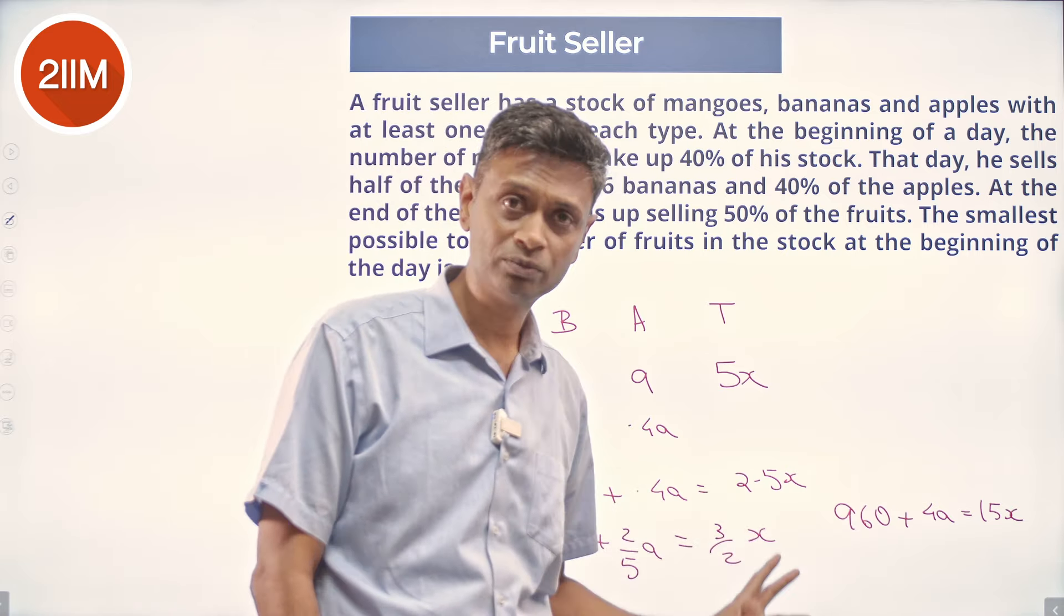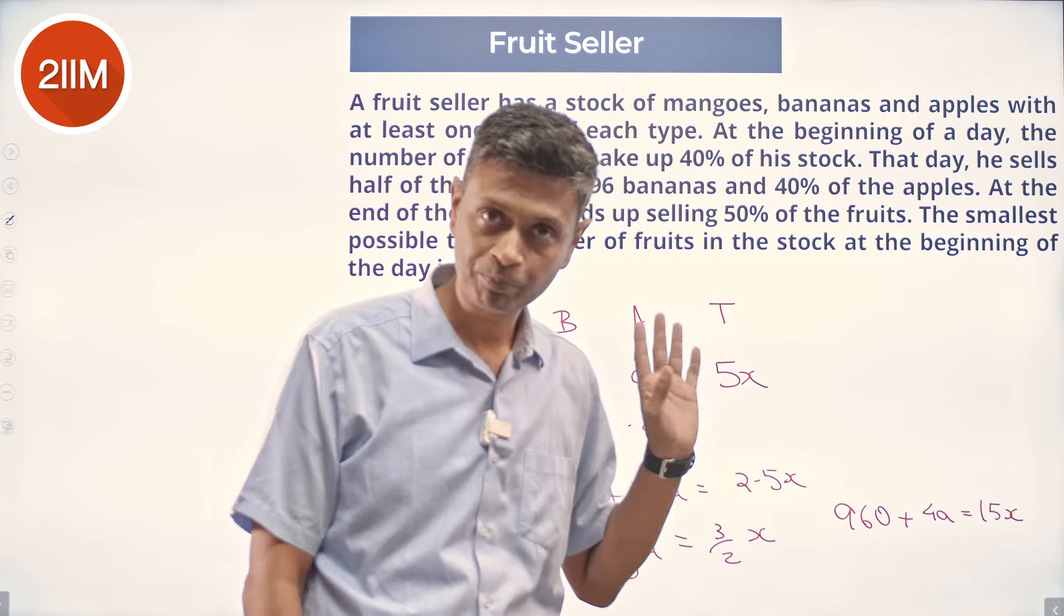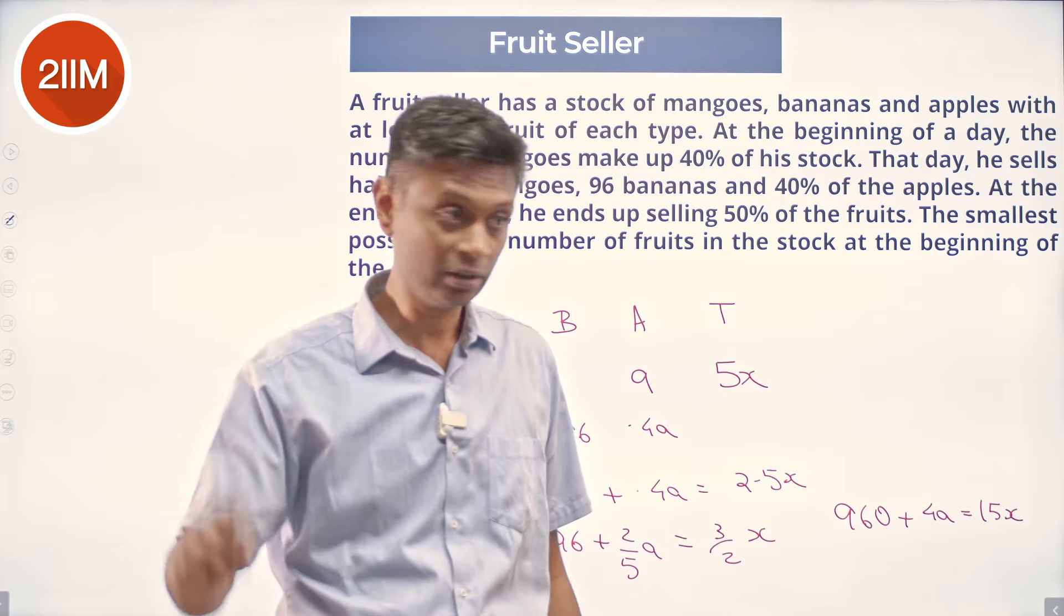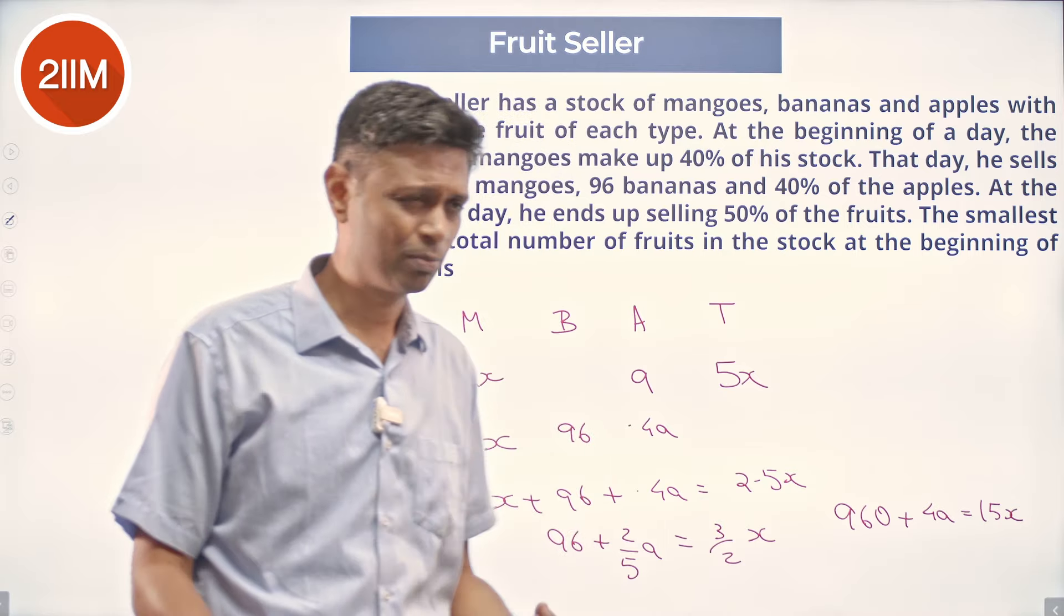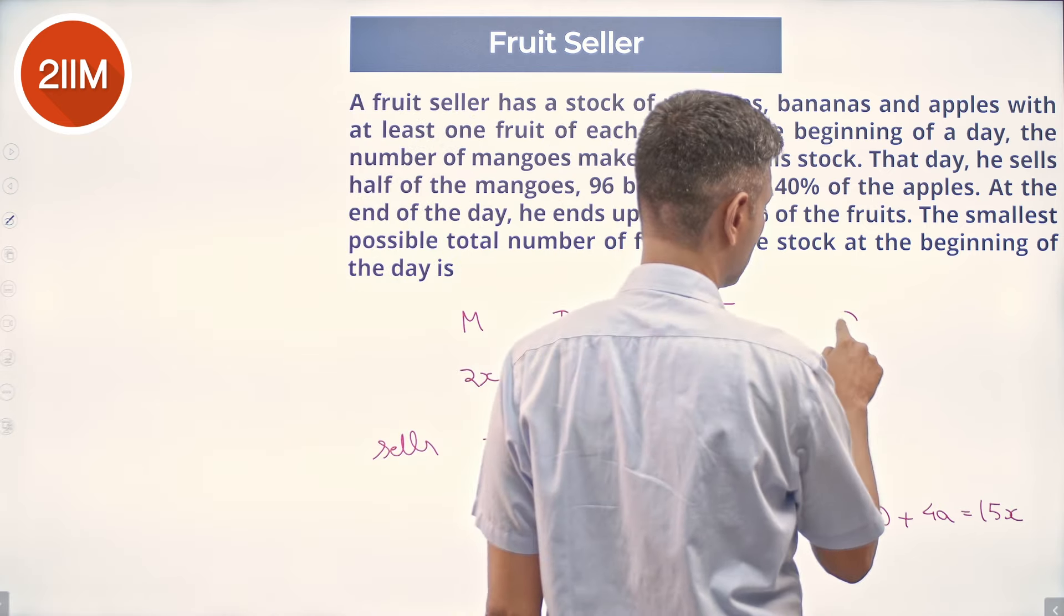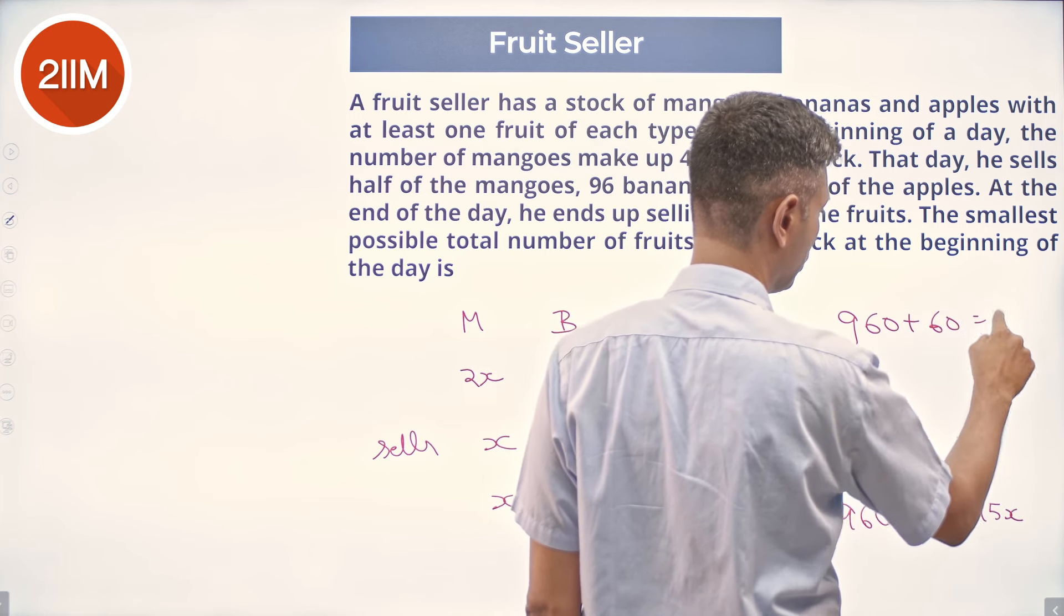960 is a multiple of 15, it's a multiple of 3, and a multiple of 5. Now 4a has to be a multiple of 15 in order for this to get satisfied. The smallest possible value is a equals 15. Put a equals 15: 960 plus 60 equals 15x.